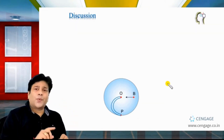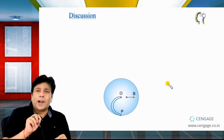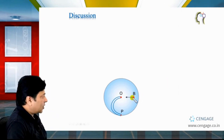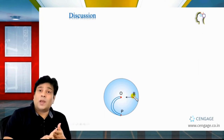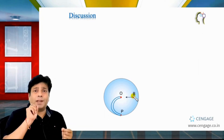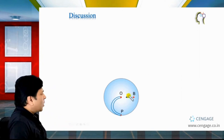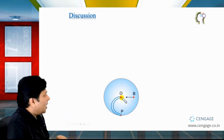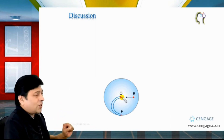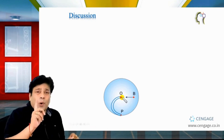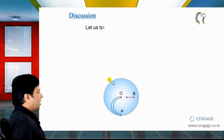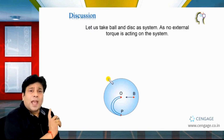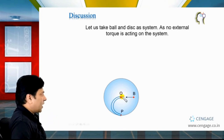Let us analyze the situation. First, we need to identify our system, which consists of the disc and the ball. The axis of rotation passes through O and is vertical. We can observe there is no external torque acting about our axis of rotation. Therefore, we can apply the conservation of angular momentum principle about the axis passing through O, which is vertical.